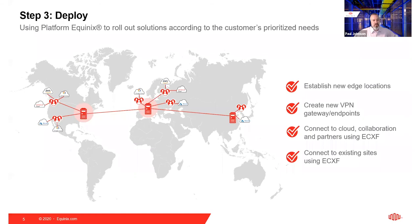If you did get the opportunity to join us last time, where we left off after Prioritize was we had a future go-forward vision of where we want to end up, with a prioritized list of steps to take to get to that vision. This is a quick visual of what that vision might actually look like, and you can see some of the steps we want to start taking — establishing new edge locations, connecting to the cloud for our on-ramp to the cloud, and further solidifying our remote user access.